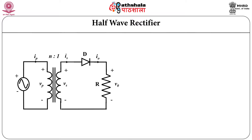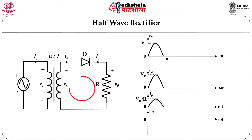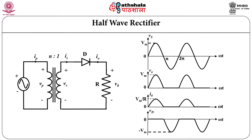Let us consider the half wave rectifier. It consists of one diode connected to the load in series as shown in figure. There is a transformer which is used for isolation. When input voltage is positive, the diode will conduct and it will give the output — input voltage will appear at the output. During negative half cycle, the diode will be reverse biased and it will give no output. The timing waveforms are shown in the waveform diagram.